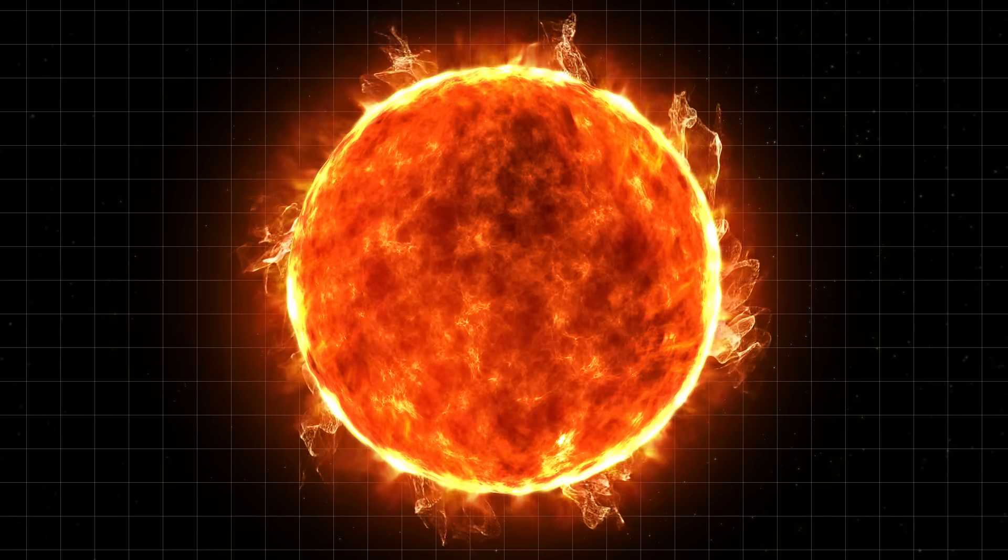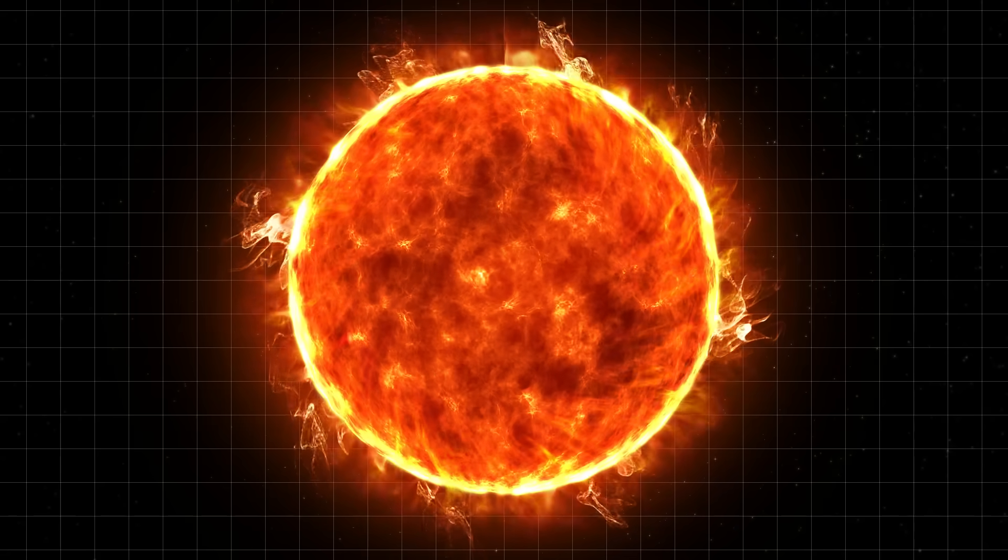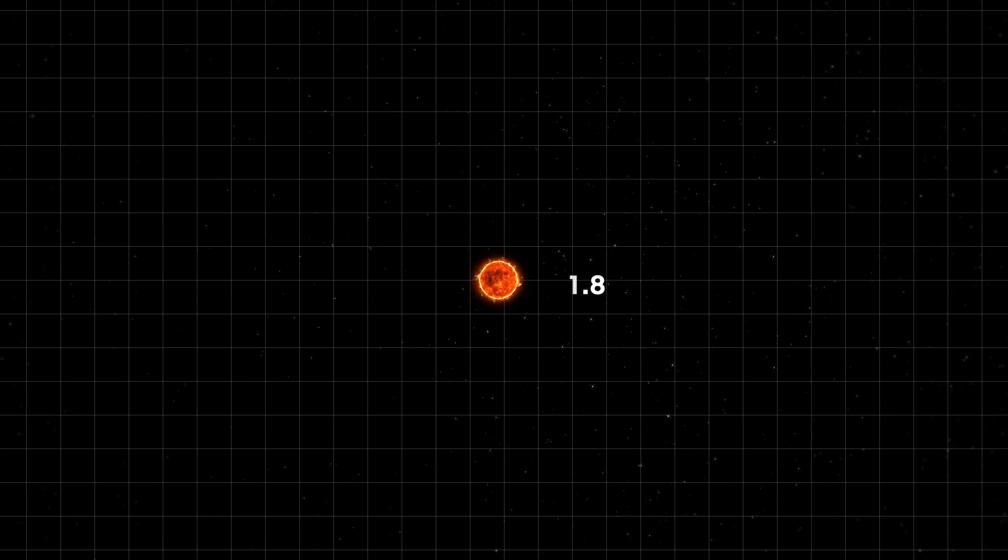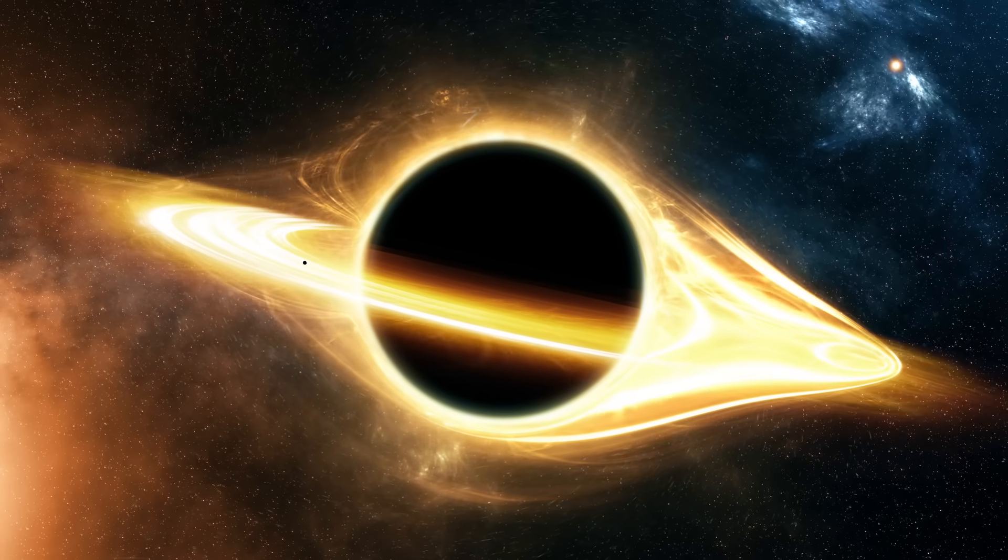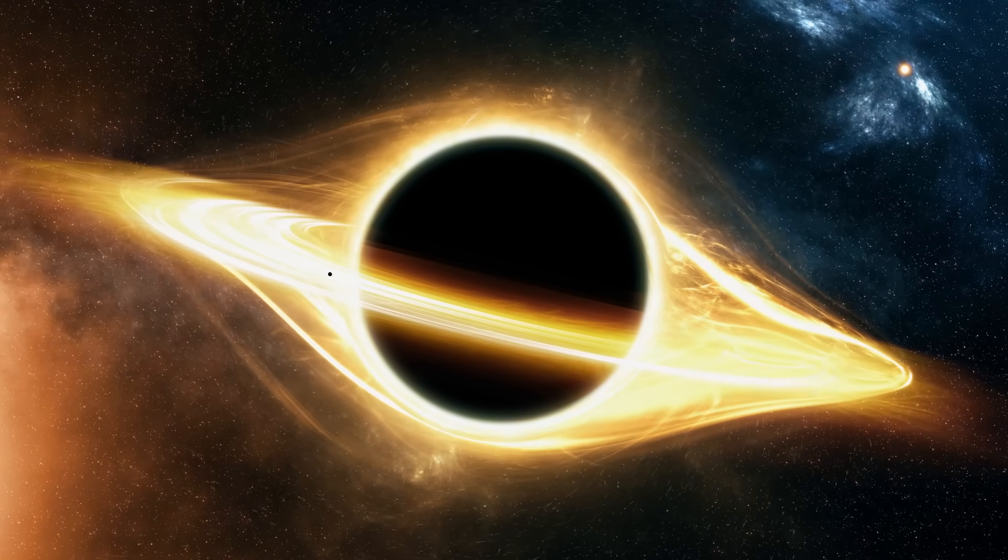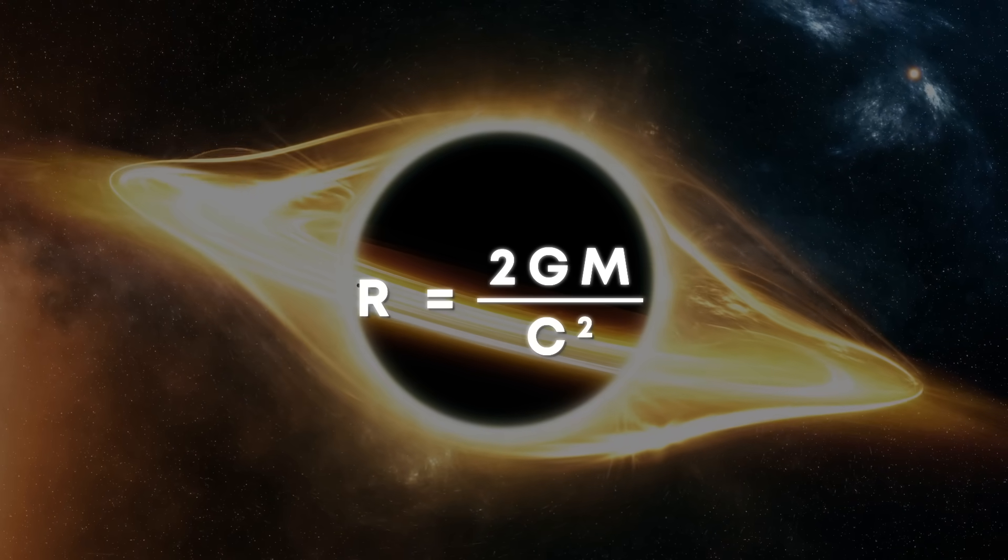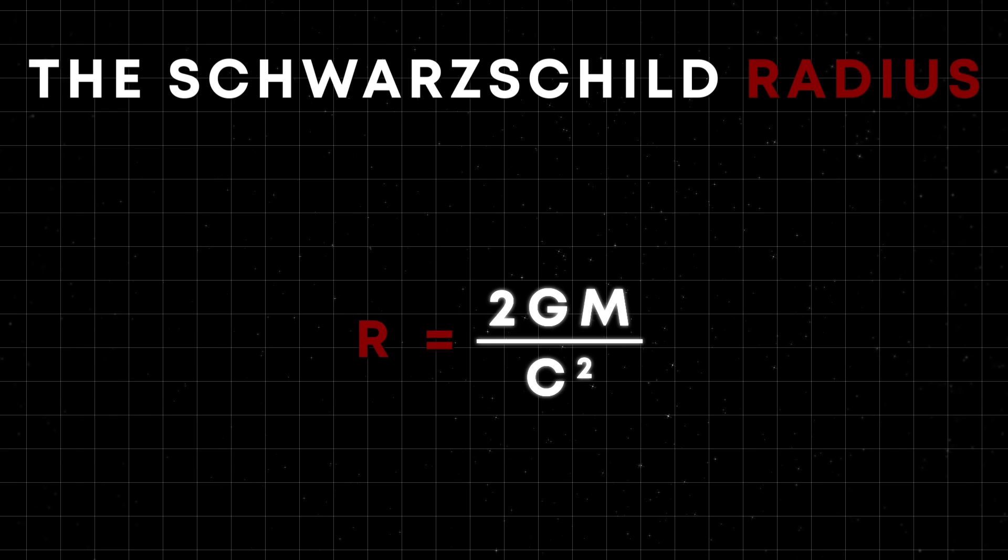For example, in order for the sun to become a black hole, it would have to be squeezed to the size of just about 1.8 miles in radius. Theoretically, you can turn any object into a black hole. There's a formula that tells us how much something has to be squeezed to become one. This threshold is known as the Schwarzschild radius.